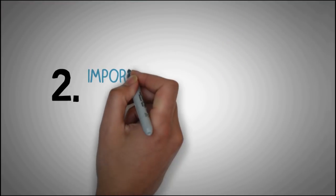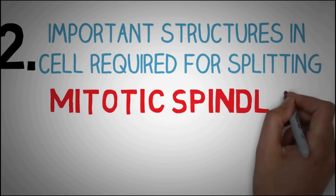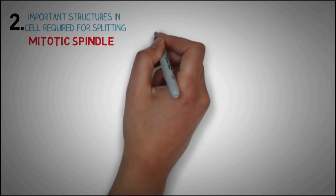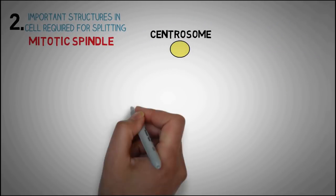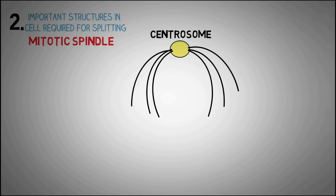Next, we will talk about one important structure inside the cell that is essential for proper splitting of the nucleus, the mitotic spindle. The mitotic spindle consists of centrosomes and microtubules which are the rope-like structures projecting from centrosomes.